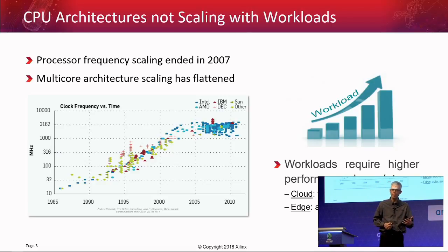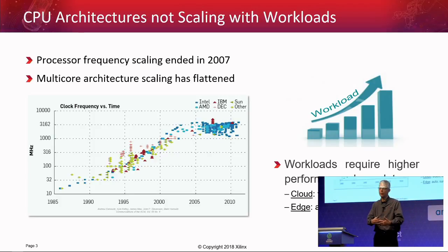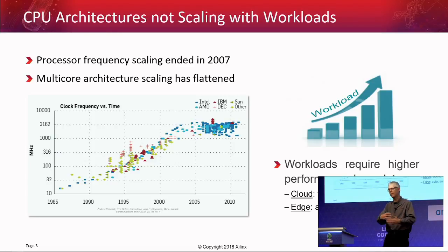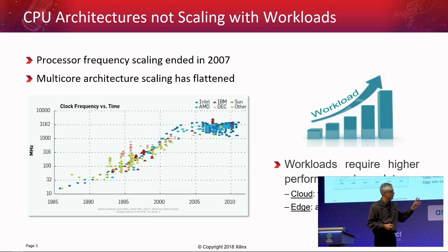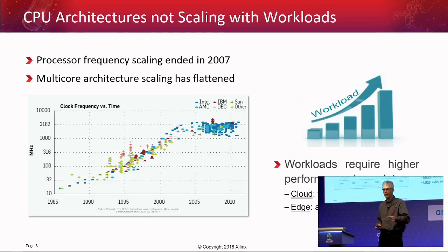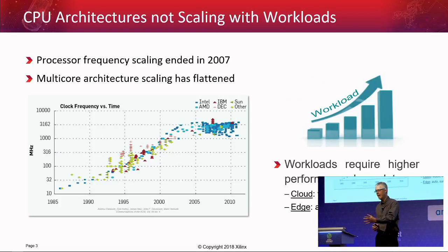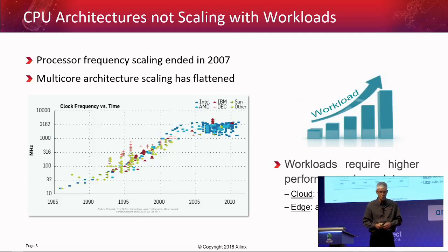FPGAs as programmable hardware come in because you can use the same board for a lot of different things. You can even time-slice it — use it for some acceleration first and then other types of acceleration later. This applies both in the cloud — Amazon and others have FPGA servers, like the F1 from Amazon — and at the edge for driver assist, ADAS, autonomous driving, and embedded vision.